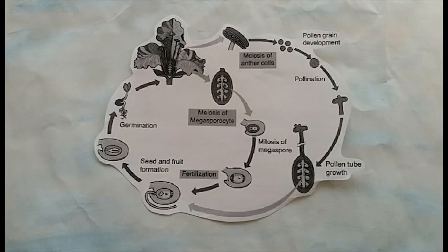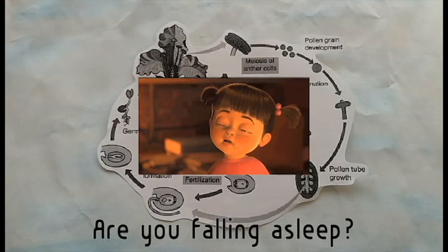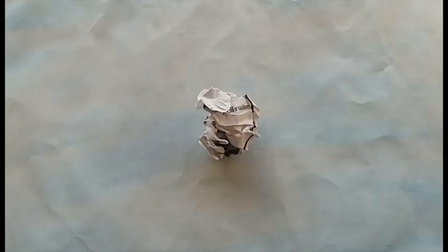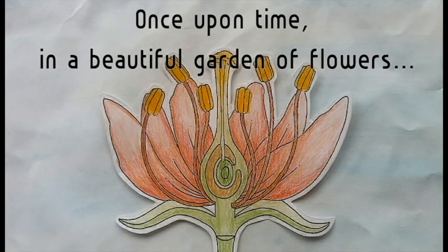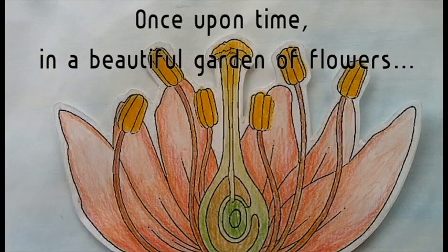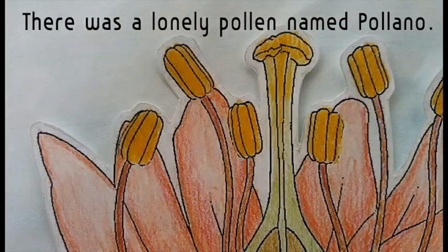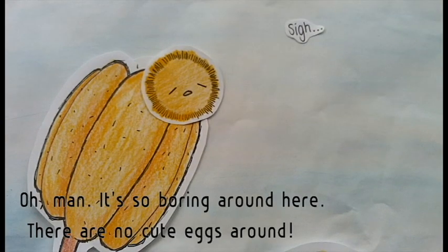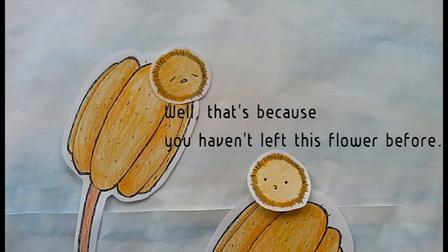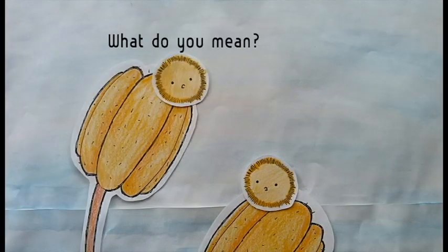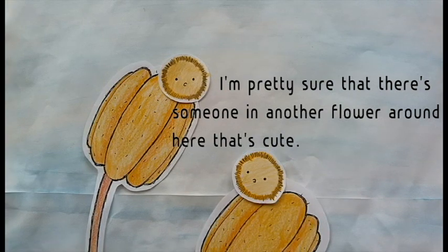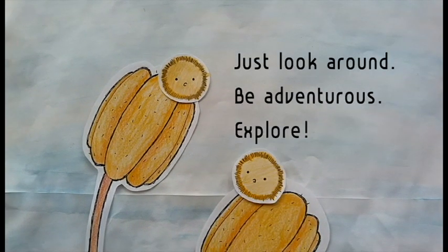You can observe the life cycle of the angiosperm in this diagram. Hey, are you falling asleep? Is this boring to you? Well, okay, let's not use this diagram. How about I tell you a story instead? Once upon a time, in a beautiful garden of flowers, there was a lonely pollen named Polana. 'Oh man, it's so boring around here. There are no cute eggs around.' 'Well, that's only because you haven't left this flower before.' 'Be adventurous. Explore.'